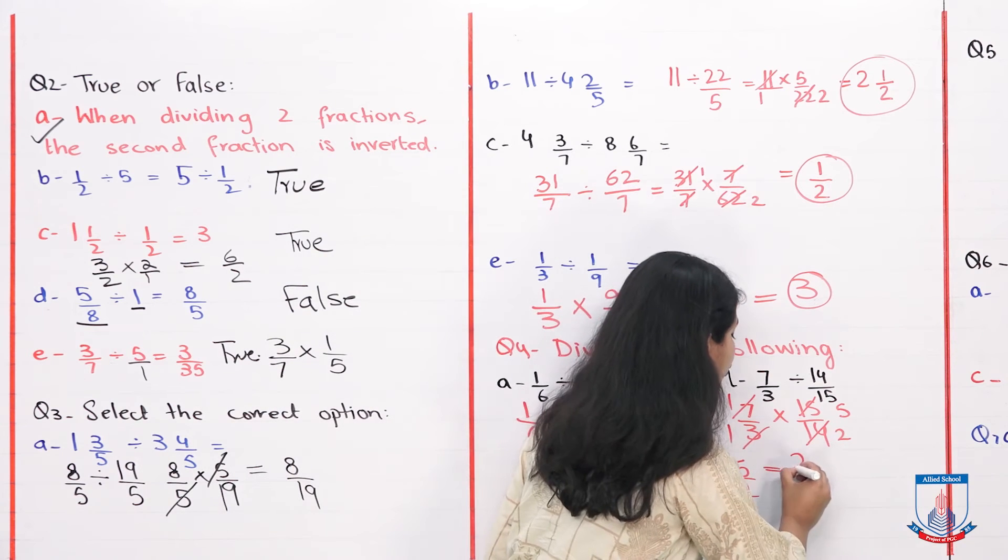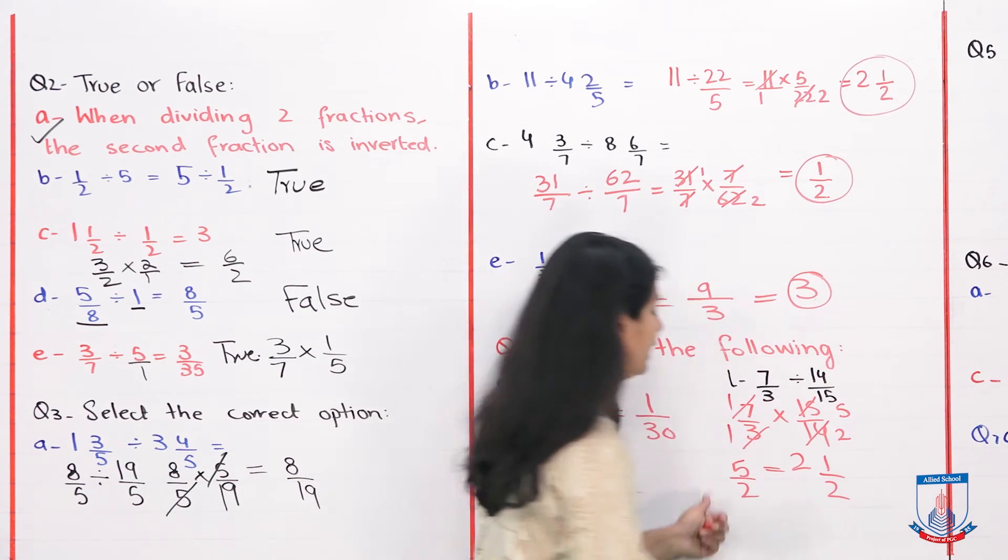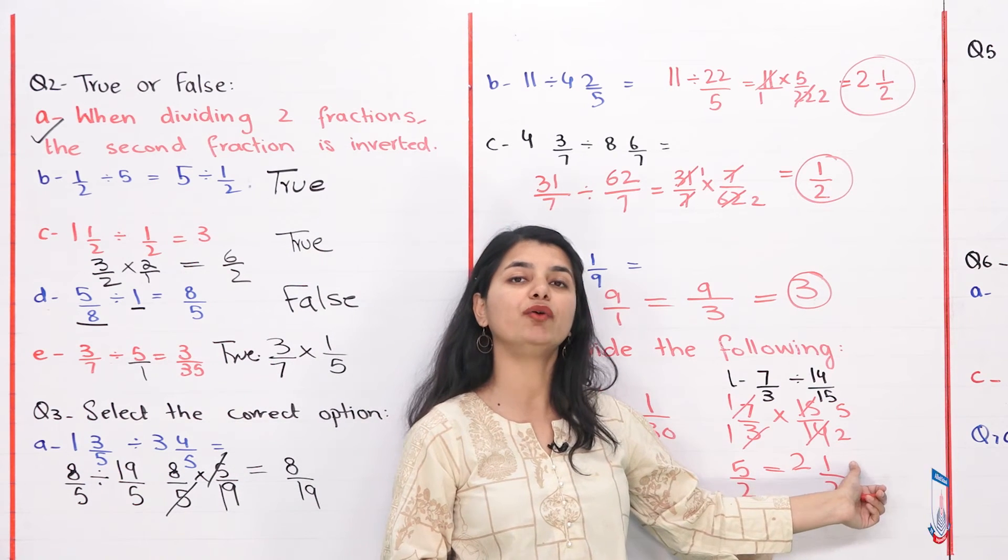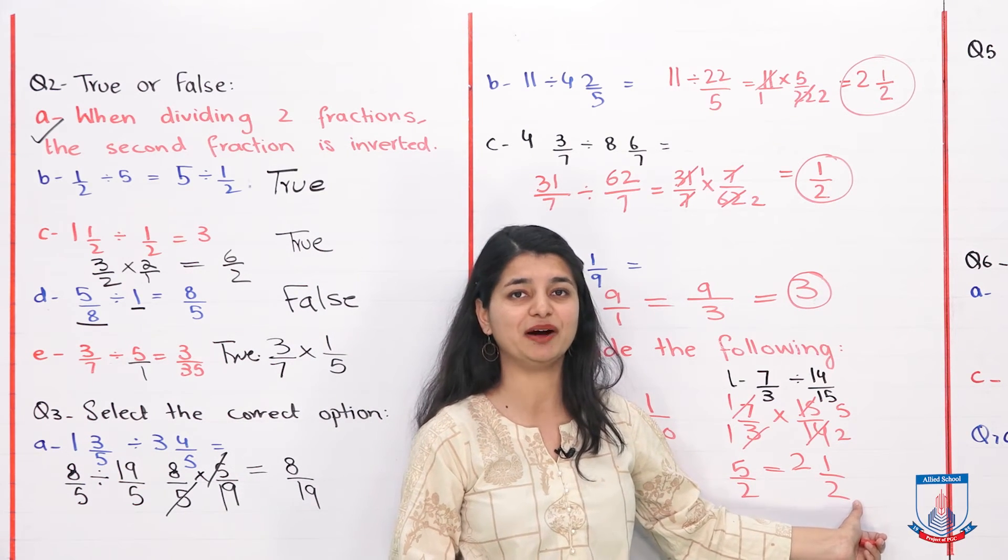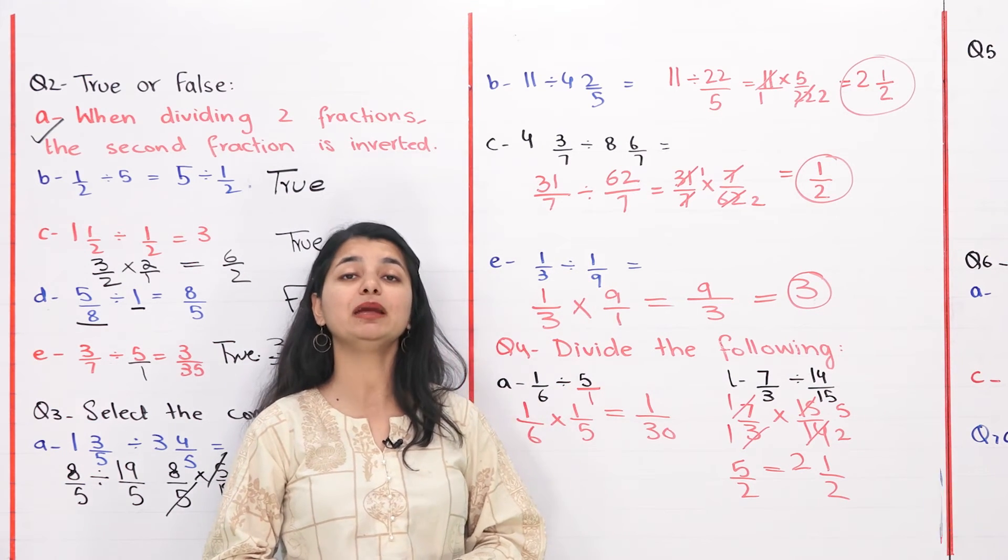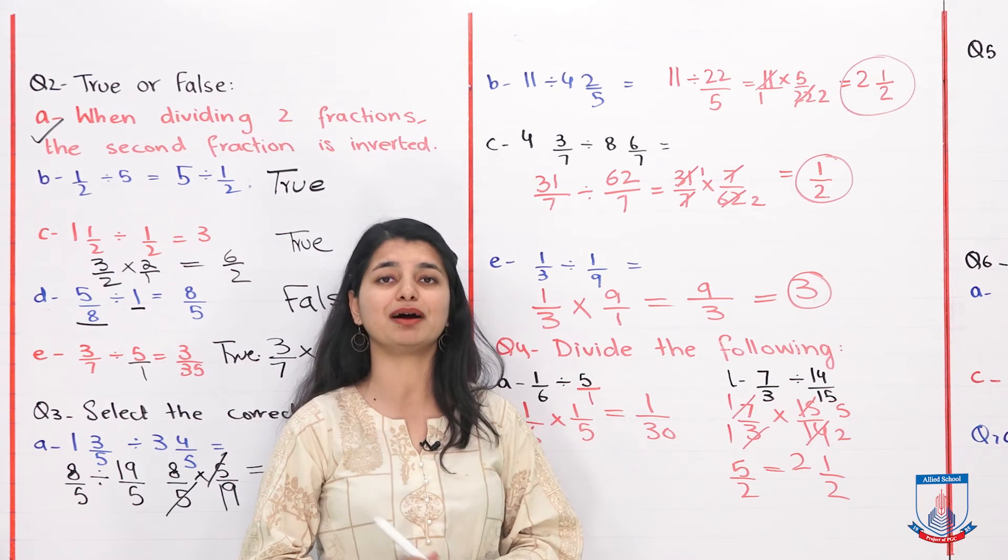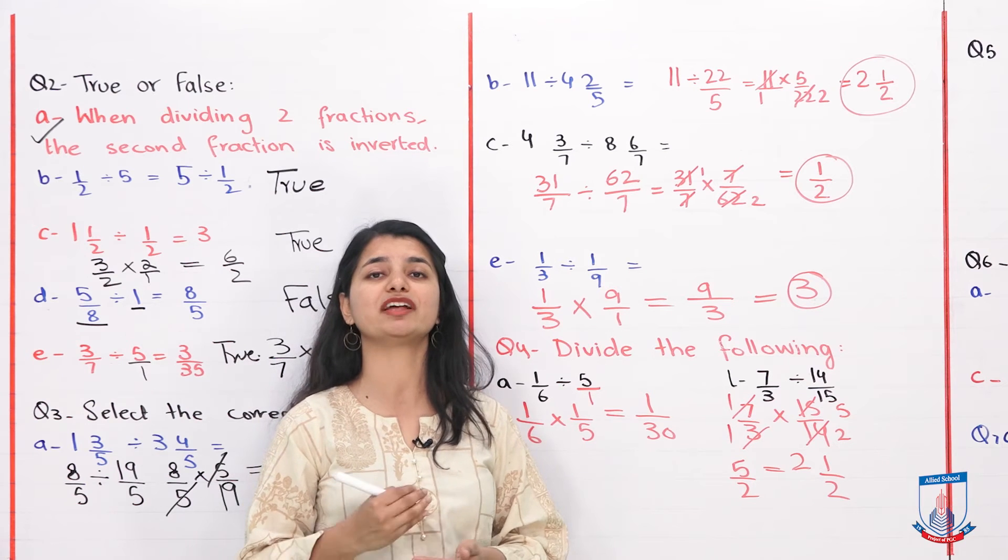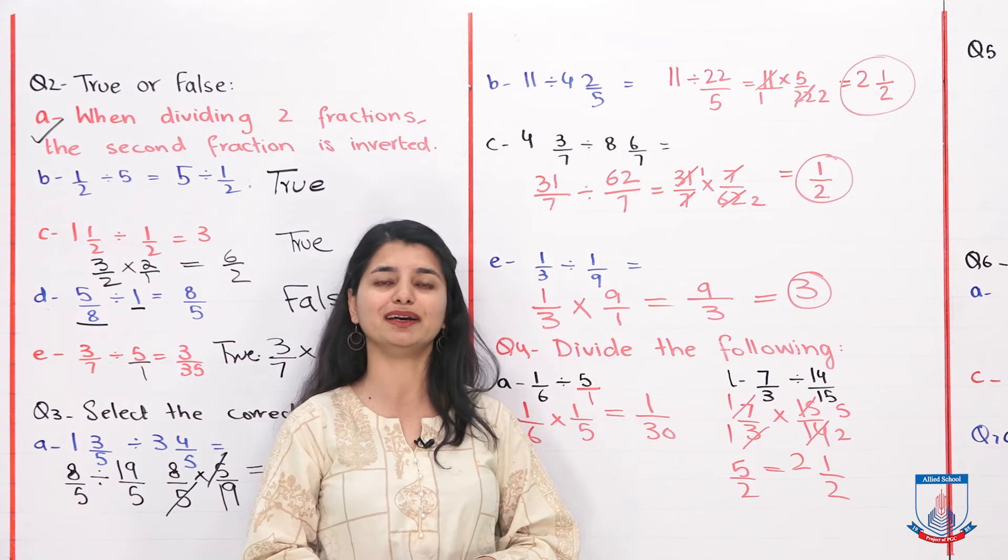5 over 2 equals, we solved this, we get 2 whole 1 by 2. Dividing these, you can also check. Your quotient is 2, remainder is 1, denominator stays the same. With that students, we've discussed 2 parts of this question. The remaining parts, using this same methodology, you have to solve yourself, because it's very easy. You just have to take reciprocals and multiply.